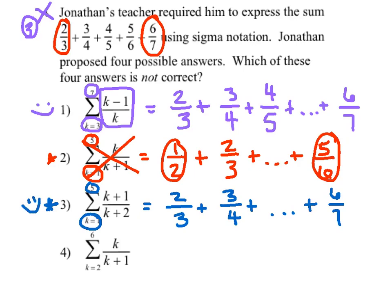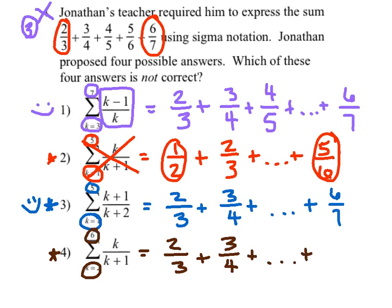For number four, start with k equals two: two over three. Then k equals three gives three fourths. Fast forwarding to the last term, substituting k equals six gives six over seven — from start to finish, that's a perfect match. So three out of the four were equivalent, and number two was the one that did not match.